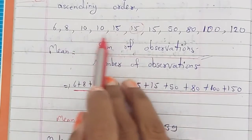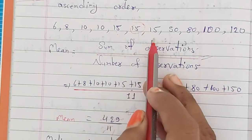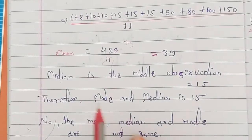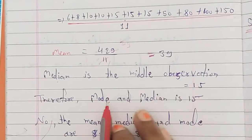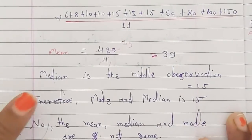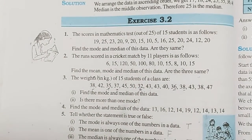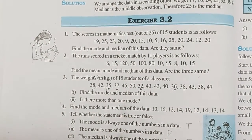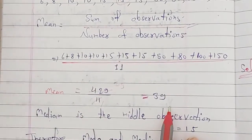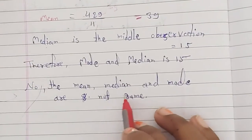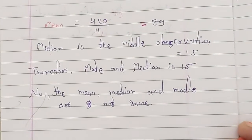For mode: which digit is repeating most? 10 appears 2 times, 15 appears 3 times. Since 15 has the highest frequency, mode is 15. Mode and median are both 15, but mean is 39 which is different. So the answer is: No, the mean, median, and mode are not the same.